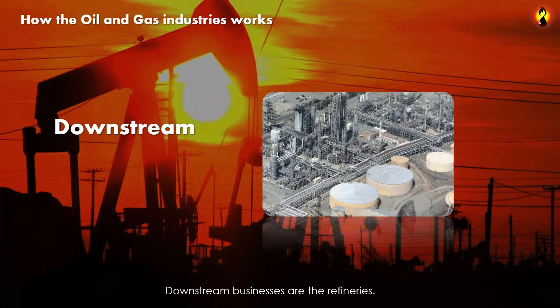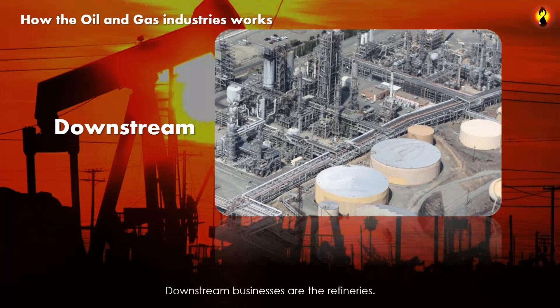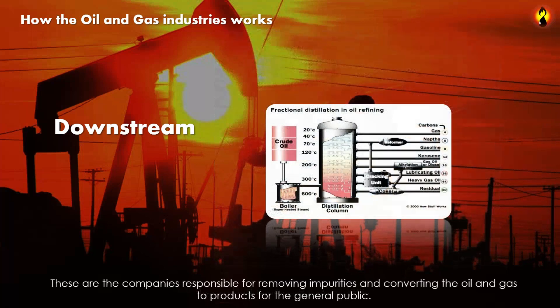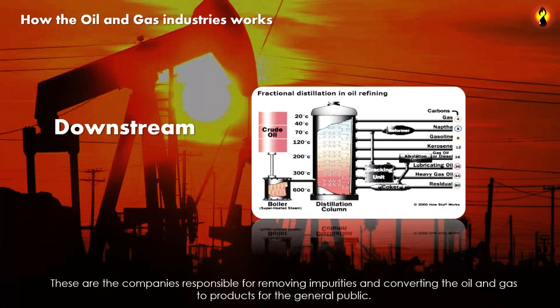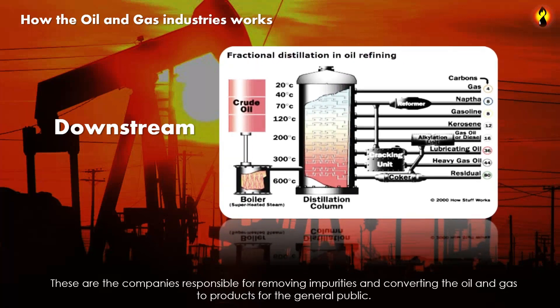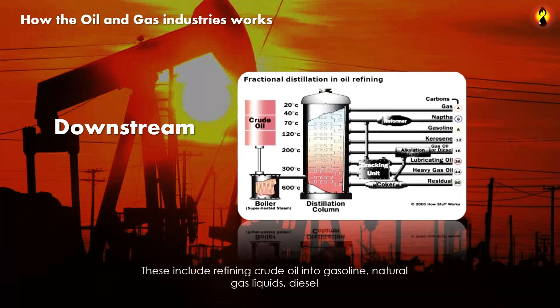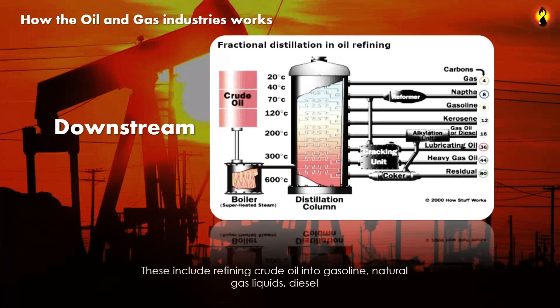Finally, downstream businesses are the refineries. These are the companies responsible for removing impurities and converting oil and gas products into products for the general public. These include refining crude oil into gasoline, natural gas liquids, diesel, petrol, and more.